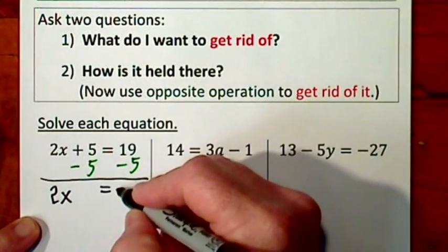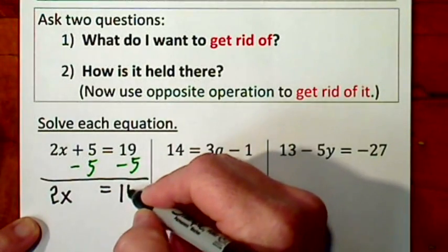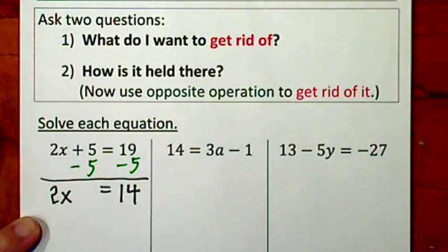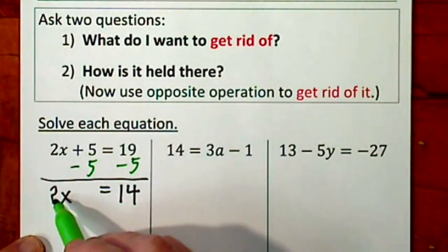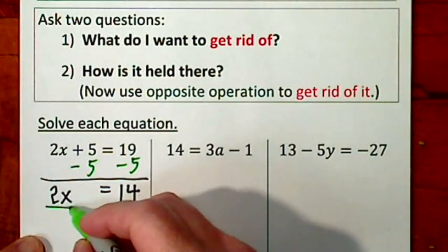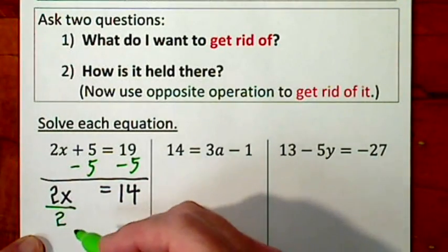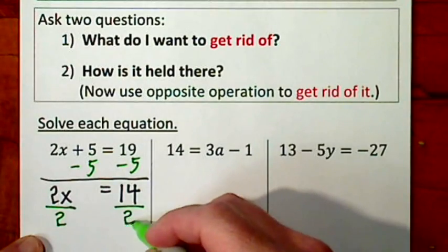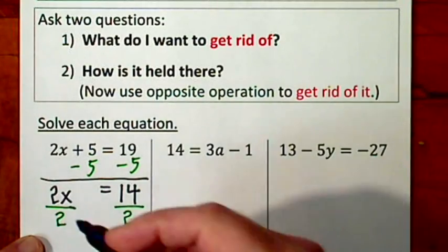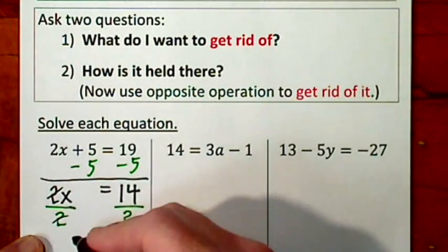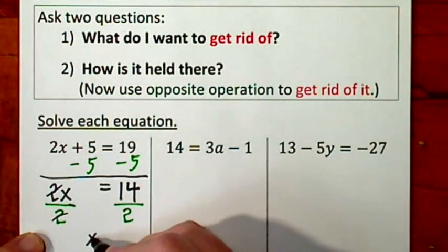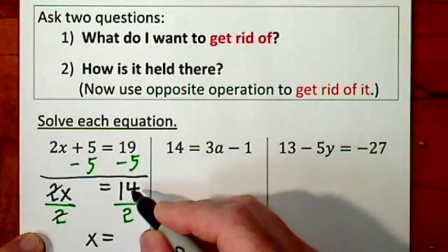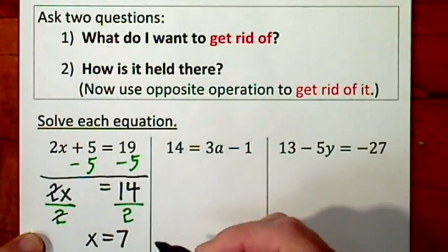Signs are different, subtract, keep the sign of the larger. Now you want to get rid of the 2. It's held by multiplication. Opposite operation is division. Divide each side by 2. 2 goes into 2 once. You end up with x equals 14 divided by 2 is 7.